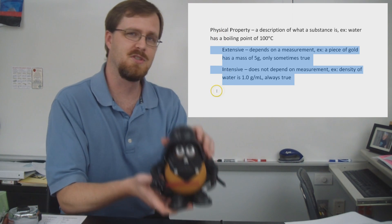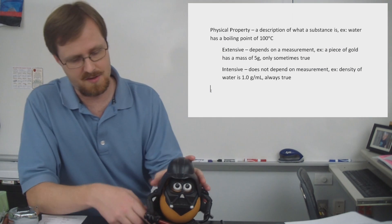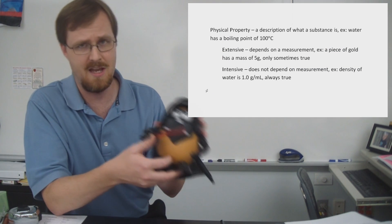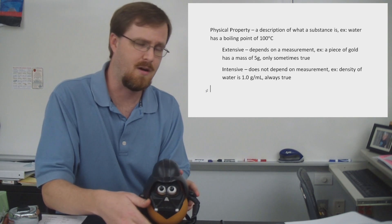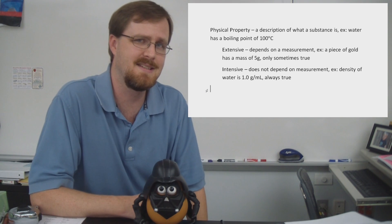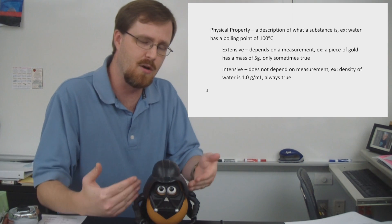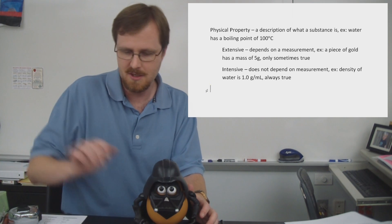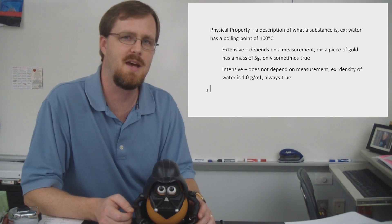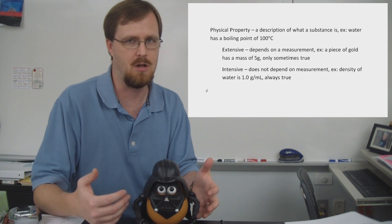And to help demonstrate the difference between the two, allow me to present to my friend, Darth Tater. Now, as you can see, Darth Tater has a black helmet, a red lightsaber, and a black cape. Now all of those could be considered intensive properties because they are inherent to what they are. I could have 20 different Darth Taters lined up on my desk and they would all have those same colors.